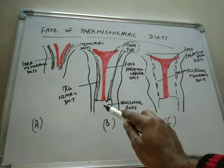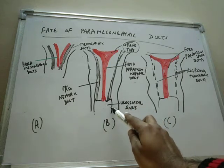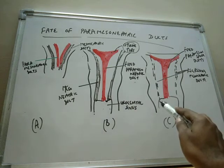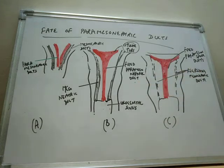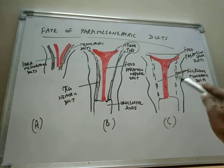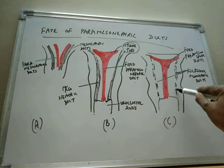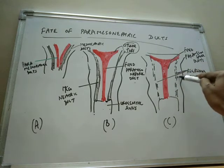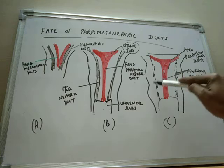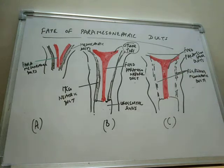The urogenital sinus forms the vagina. The mesonephric ducts in females regress. So basically, the internal reproductive structures of females are mainly formed from the paramesonephric ducts.